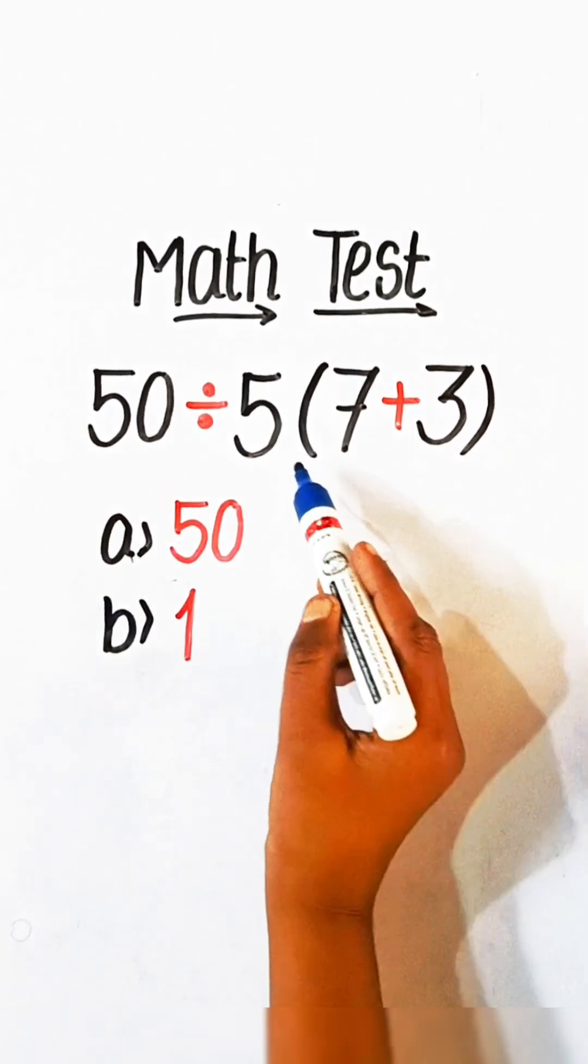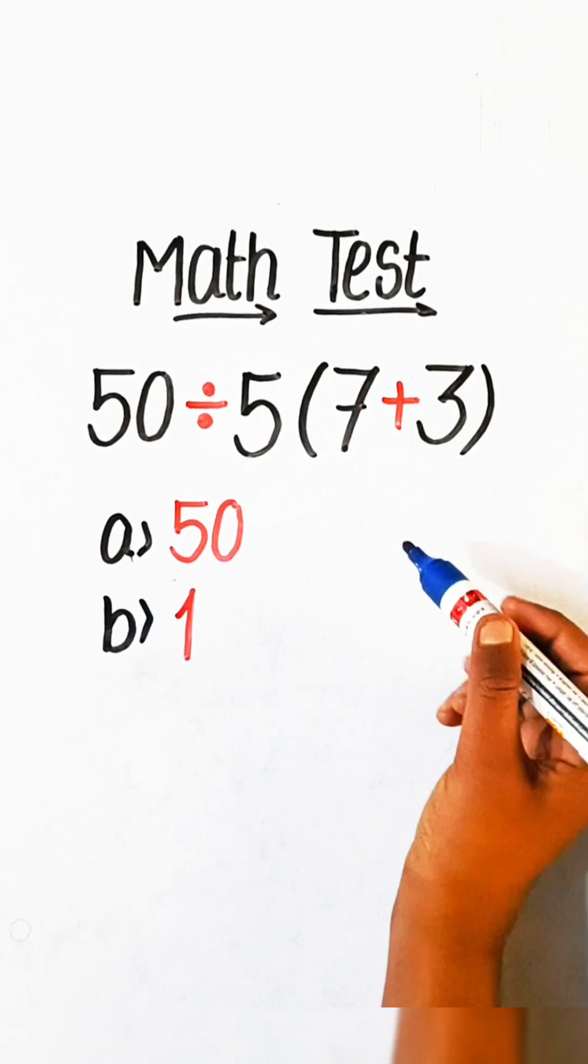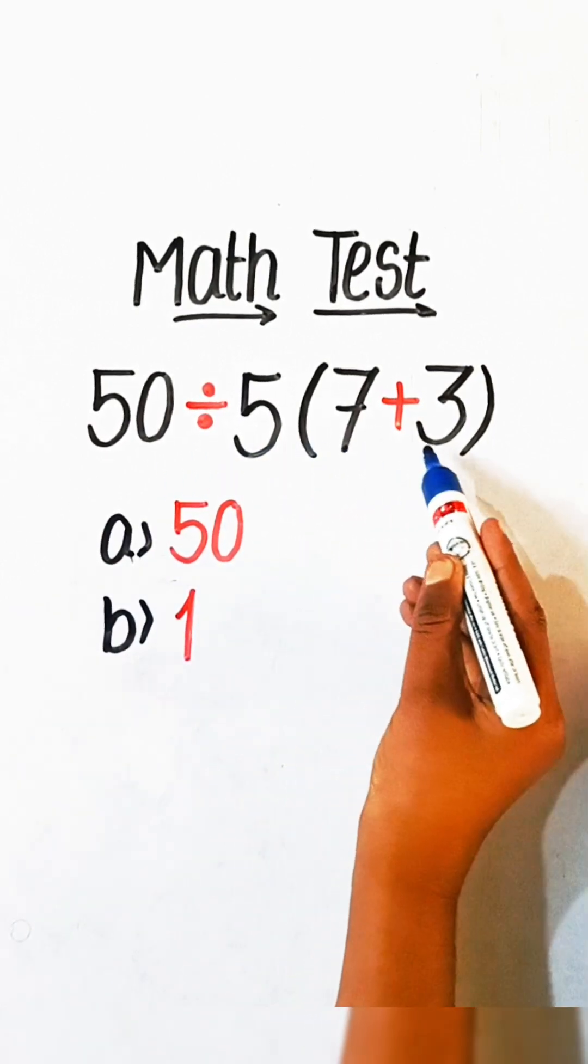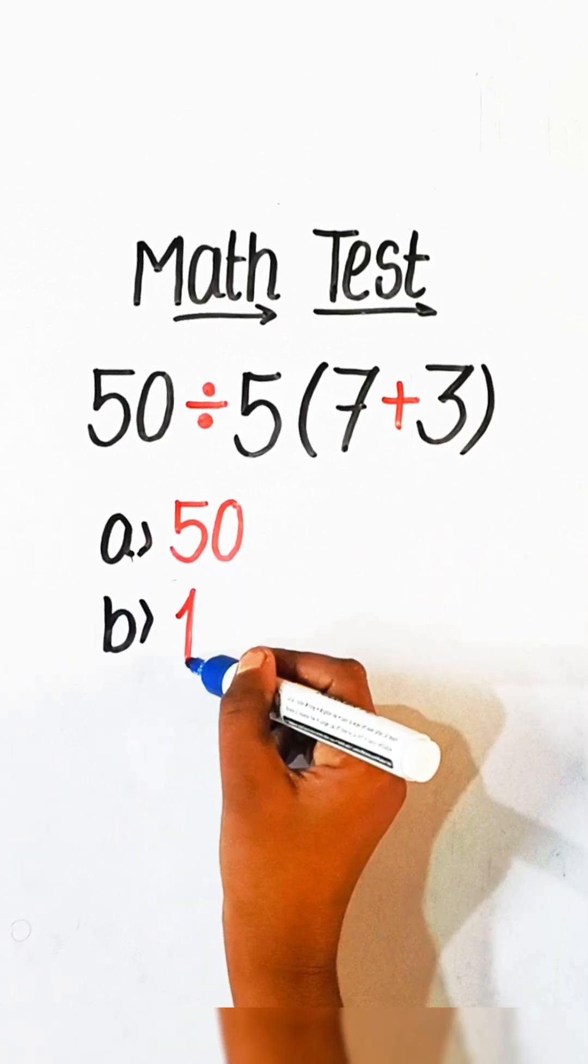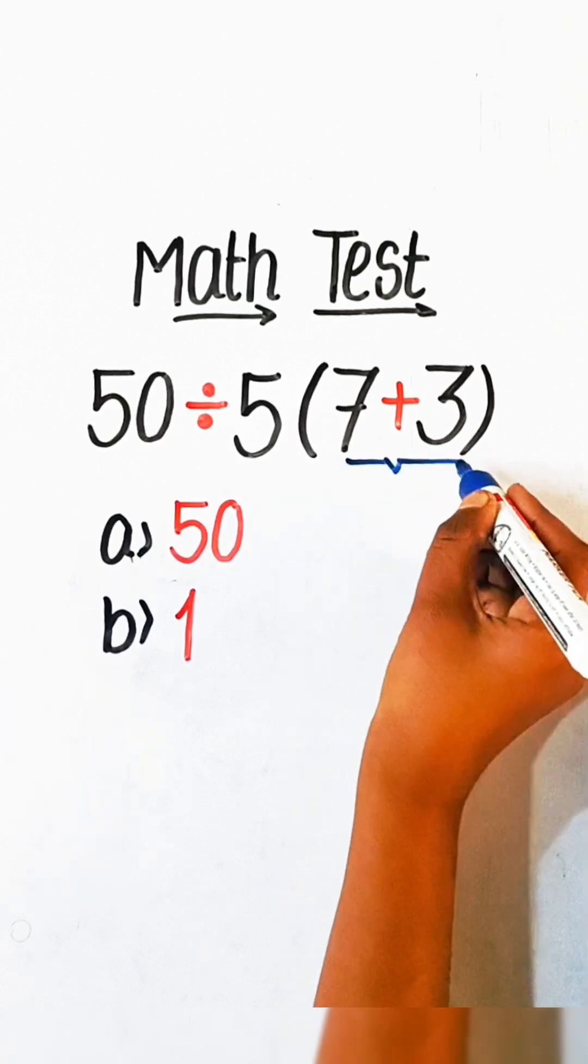Hello everyone, in this video we will solve this basic math equation: 50 divided by 5 under bracket 7 plus 3 equals to what? Option A: 50, Option B: 1. So let's solve this. First we have to solve this bracket part.